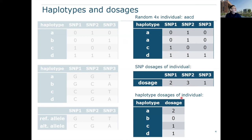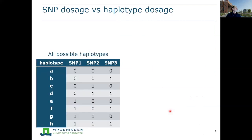What we are interested in are the haplotype dosages. For A, A, C, D, we have two times A, zero times B, one times C, and one times D. The SNP dosages are what are observed from the SNP array data, and what we want to know is how the individual is composed in terms of haplotypes.